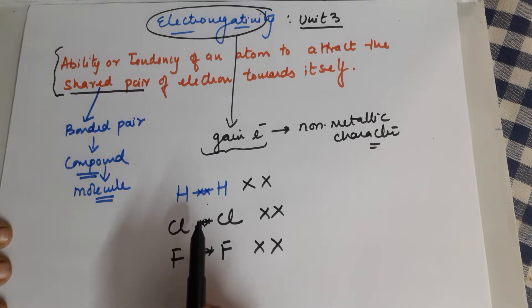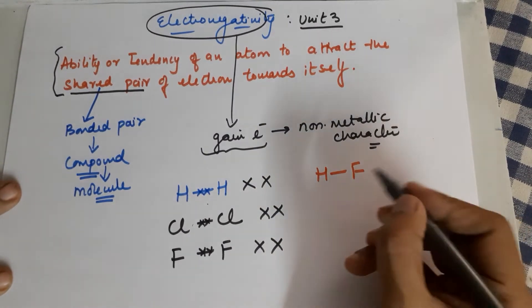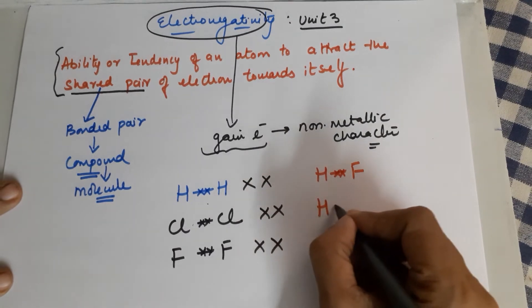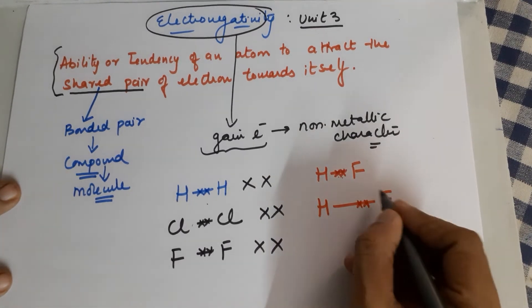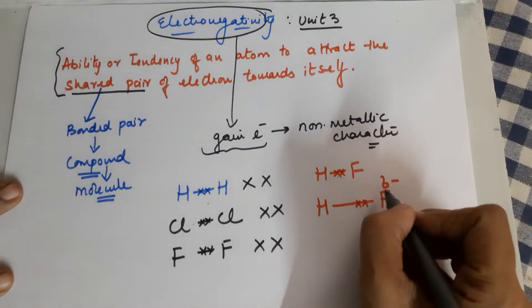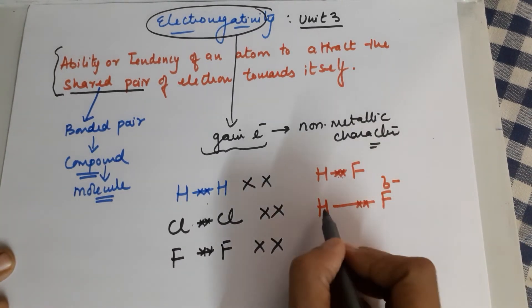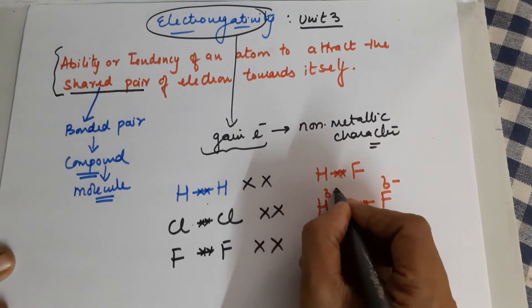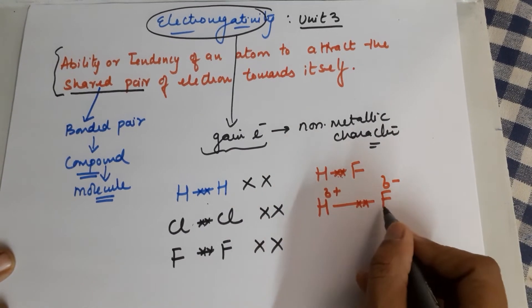But if I take H-F, fluorine is more non-metallic and more electronegative. So the shared pair of electrons, rather than residing in the middle, moves slightly more towards fluorine. This is represented as delta minus on fluorine — because the electron has shifted slightly towards it — and delta positive on hydrogen, because fluorine has pulled the electron away from hydrogen.